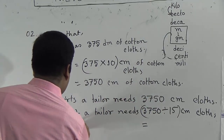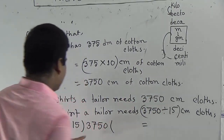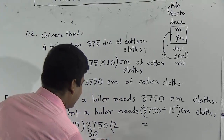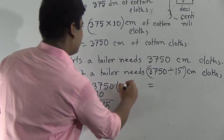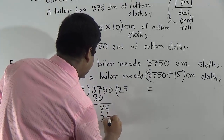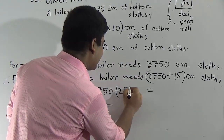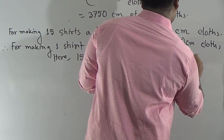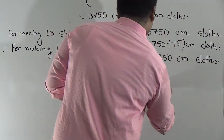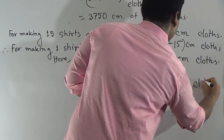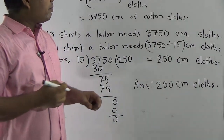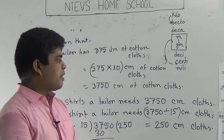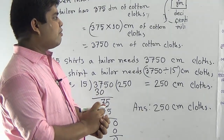Now we perform the division. In 3750 ÷ 15: 15 goes into 37 two times — 2 × 15 = 30, remainder 7. Bring down 5 to get 75; 15 goes into 75 five times — 5 × 15 = 75, remainder 0. Bring down 0; 15 goes into 0 zero times. The required amount of cloth is 250 centimeters. This is the required answer. Before solving a math problem, you should always make a plan or algorithm, which makes it easier to solve.